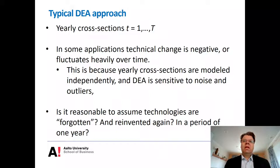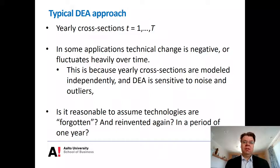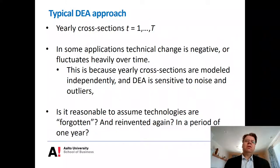If we think about technical progress, it is worth asking: is it really possible that technical change is negative in the short term? Are some production technologies truly forgotten overnight, or reinvented within just one year? These kinds of fluctuations or technical regress are hard to believe in an empirical application. One way to alleviate this is outlier detection, but that does not necessarily help when weather-related variations affect all firms — in that case, essentially all firms are outliers to some extent.